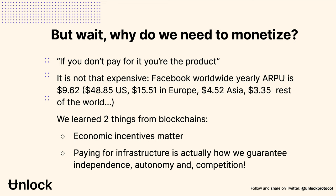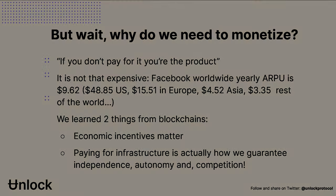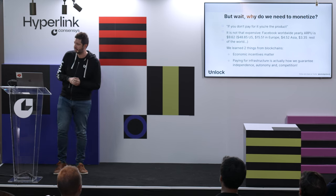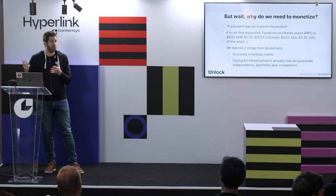Two things we learned from blockchains. Economic incentives matter. When we pay for stuff, all of a sudden the incentives are aligned between us, the consumer, and the provider of the service. If you're not paying for something, the incentives are completely misaligned in a way that can backfire easily. Also, paying for infrastructure is actually how we guarantee independence, autonomy, and competition. We all use blockchains and pay for gas — sometimes gas is expensive, but that's how we know this thing is really decentralized and that we are somehow in control.